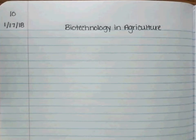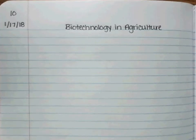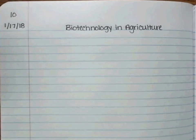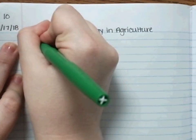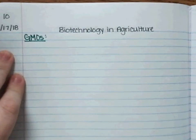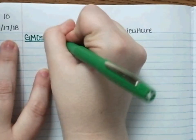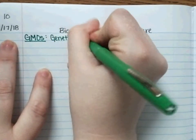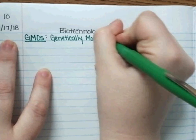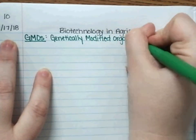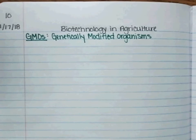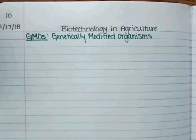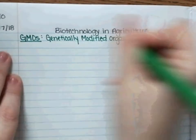The second part of biotechnology is on biotechnology and agriculture. As we mentioned before in class, there are certain technologies that specifically apply to agriculture, and others that apply to both agriculture and medicine. The first technology we're going to talk about are GMOs, which stands for genetically modified organisms. This is a controversial topic with a lot of false information, so I want to make sure you're getting the true science behind what a GMO is.